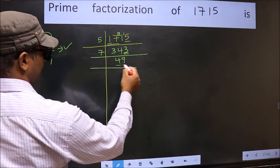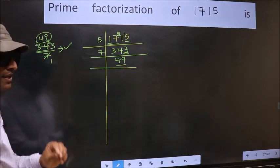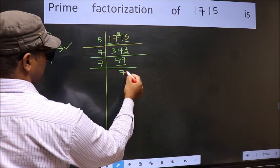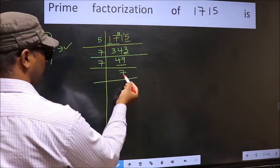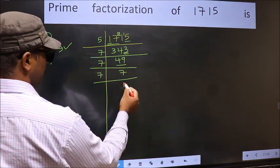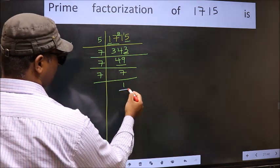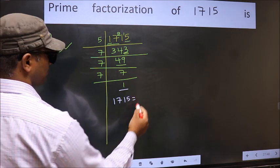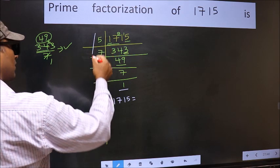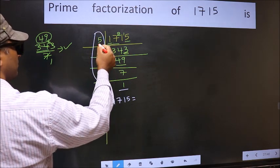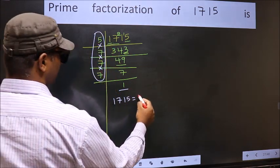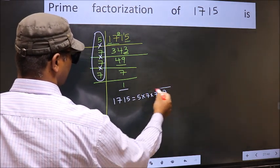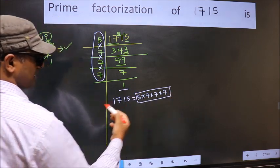Now we have 49. Always remember, 7×7=49. Now we have 7. 7 is a prime number, so 7 divided by 7 equals 1. We got 1 here. So the prime factorization of 1715 is the product of these numbers: 5×7×7×7. This is the prime factorization of 1715.